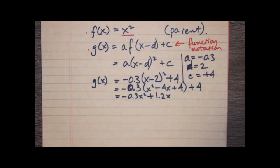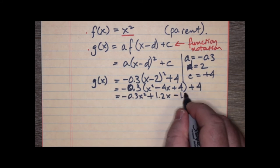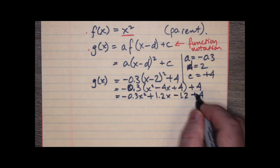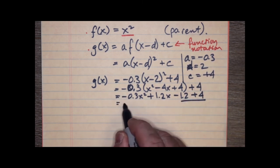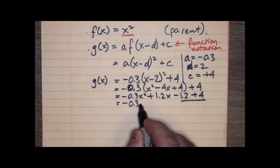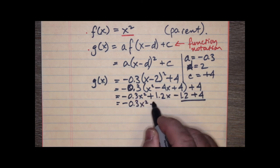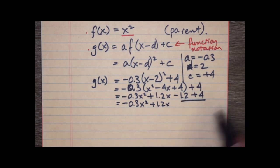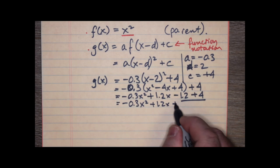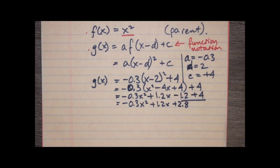And then, negative 0.3 times 4 is now going to be negative 1.2, and we're adding 4. Now, we can add these two together to finally simplify this. Negative 0.3x squared plus 1.2x. Now, this is like 4 minus 1.2, so that's 3, so that'll be plus 2.8. Okay? And that's what we end up with for g of x.